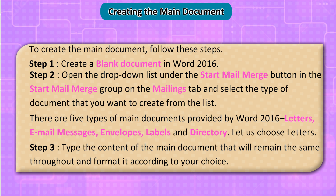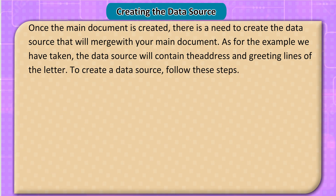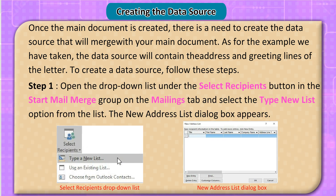Creating the data source: once the main document is created, there is a need to create the data source that will merge with your main document. For our example, the data source will contain the address and greeting lines of the letter. To create a data source, follow these steps. Step 1: open the drop-down list under the Select Recipients button in the Start Mail Merge group on the Mailings tab, and select the New List option.